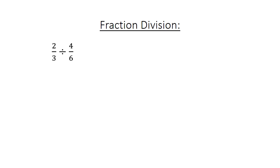Fraction division: 2 over 3 divided by 4 over 6. Invert the last fraction to get 2 over 3 times 6 over 4. 2 times 6 equals 12, and 3 times 4 equals 12, so the answer equals 1.